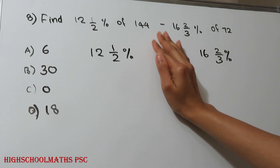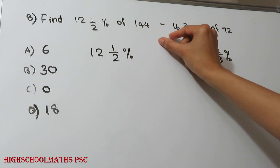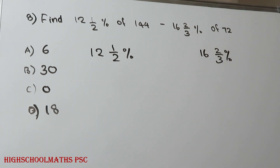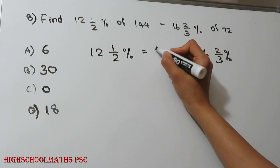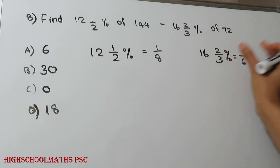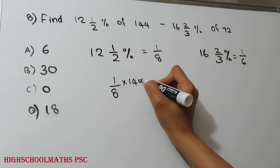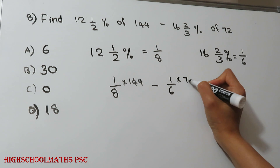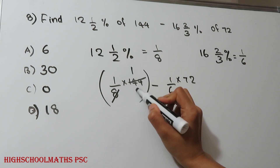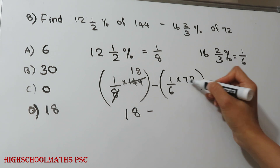Next question: Find 12 and a half percent of 144 minus 16 and 2 by 3 percent of 72. Converting percentages to fractions: 12.5% equals 1 by 8, and 16⅔% equals 1 by 6. So the expression becomes: 1 by 8 into 144 minus 1 by 6 into 72. We divide 144 by 8 to get 18, and divide 72 by 6 to get 12. The value of 1 by 6 into 72 is 12.